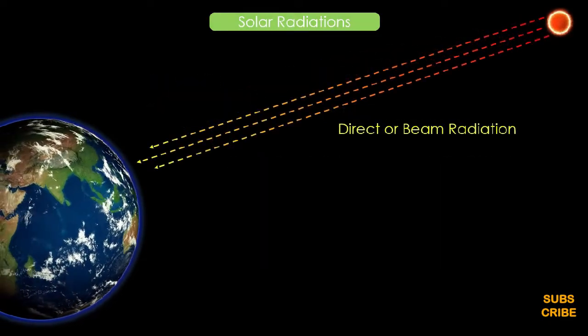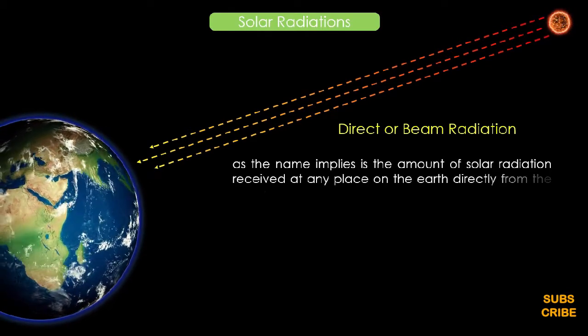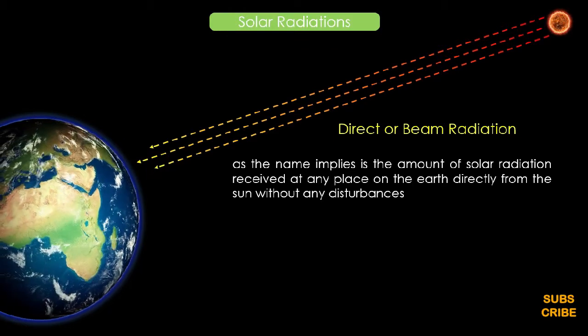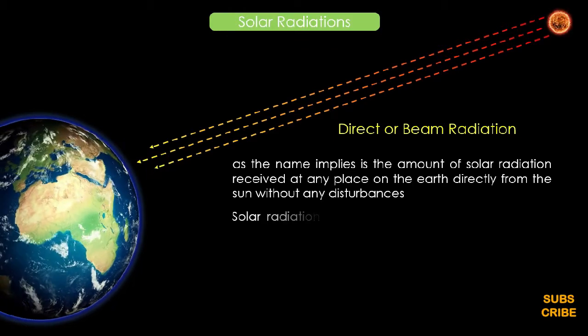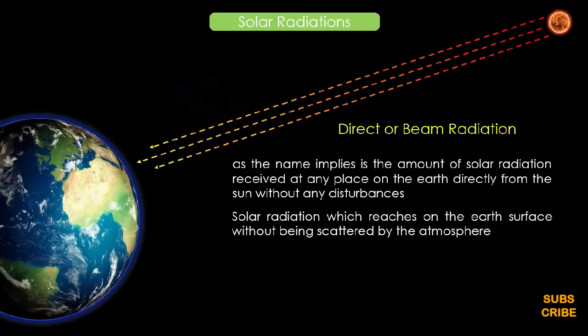Direct or beam radiation, as the name implies, is the amount of solar radiation received at any place on the earth directly from the sun without any disturbance, or solar radiation which reaches on the earth's surface without being scattered by the atmosphere.